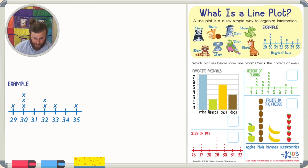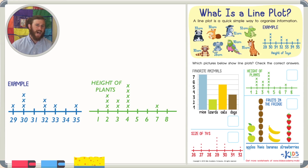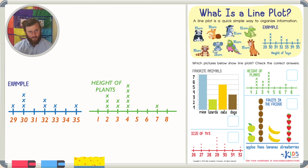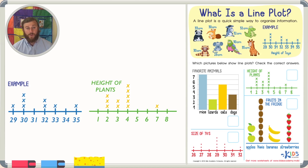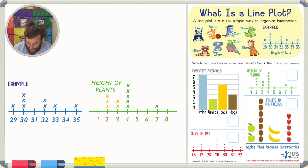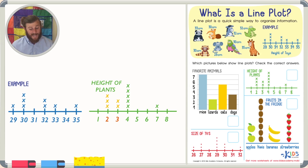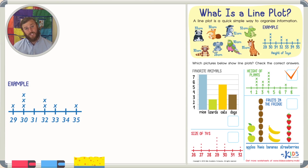The next picture shows the heights of plants, and I'm beginning to think it is a line plot. First, I see numbers on the bottom just like in the example. I also see X's above some of the numbers — there are three plants at two and two plants at three. This is the same kind of information from our example, so this picture is a line plot.